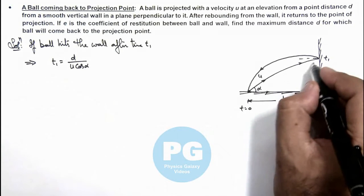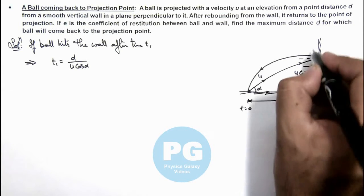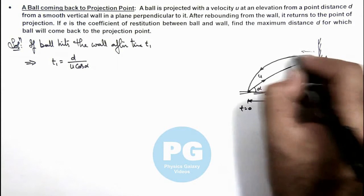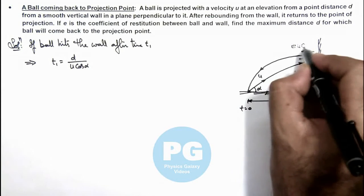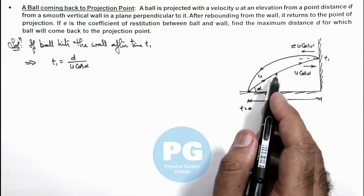And if the ball strikes the wall at speed u cos alpha it will rebound with the normal velocity e·u·cos alpha if e is the coefficient of restitution.